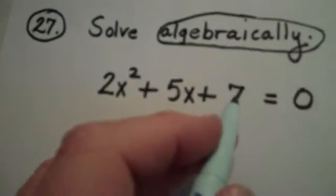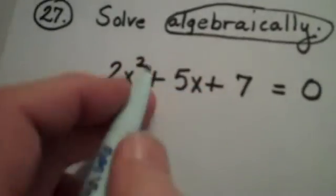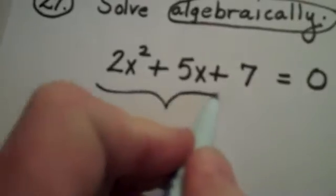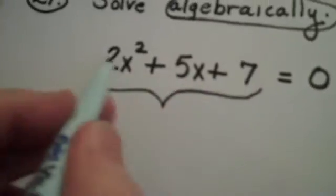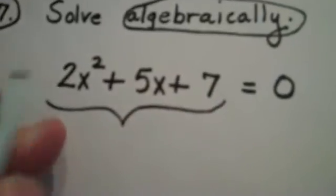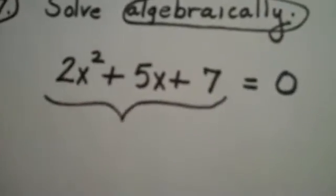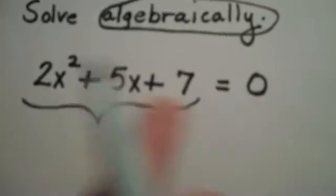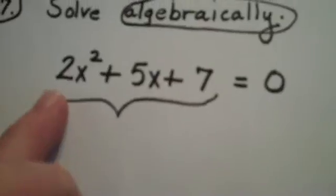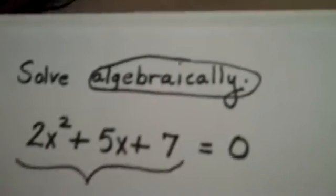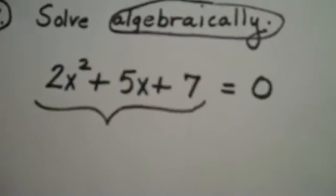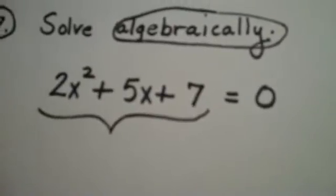In this class, you were taught one way to solve a quadratic equation would be to put it in standard form, and then enter this into the graphing calculator as a function, and then use the zero option on the calculator to find the zeros of the function, which of course are going to be the answers or solutions of this equation. The minute I tell you algebraically, it means no calculator in terms of how to solve it.